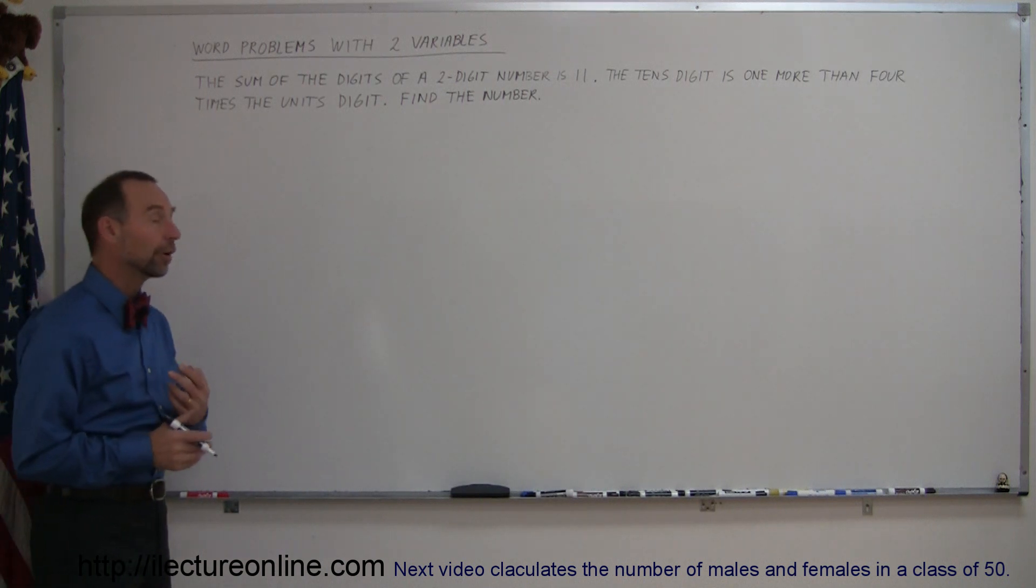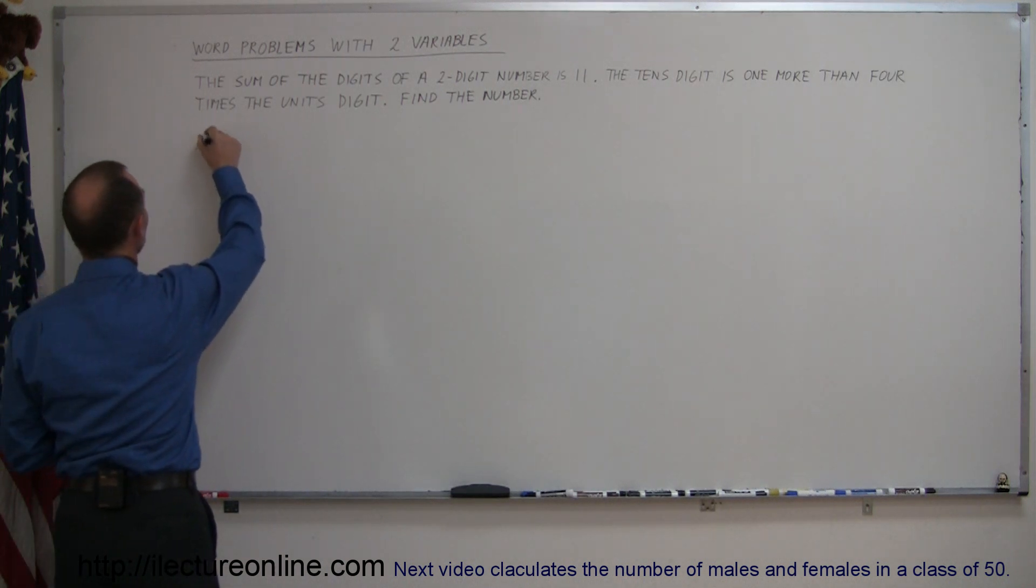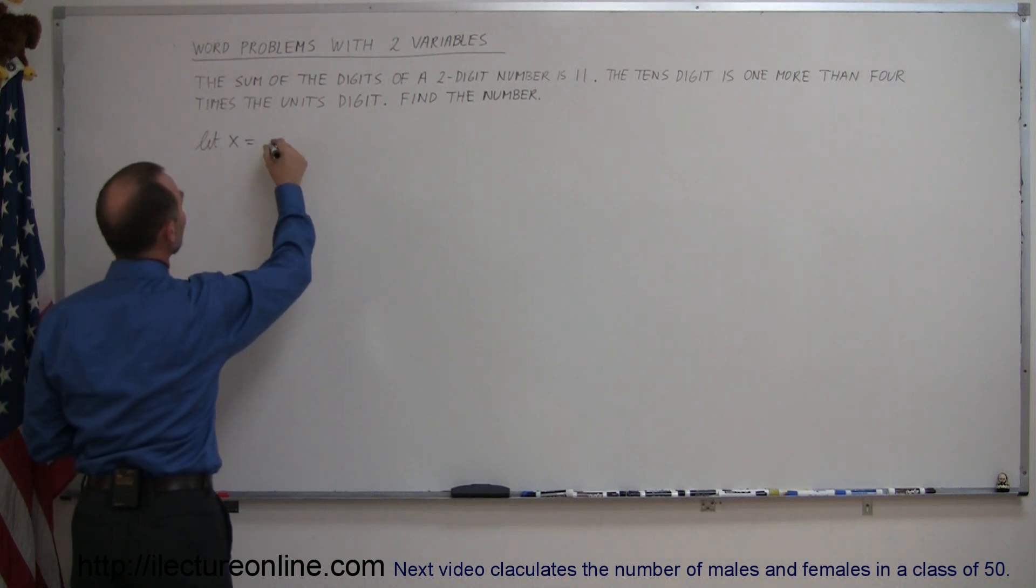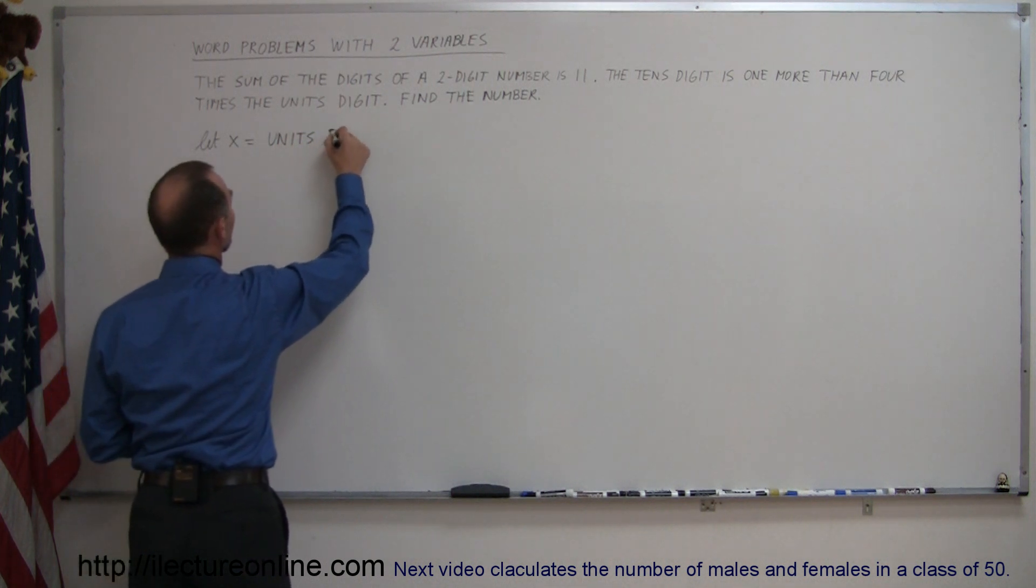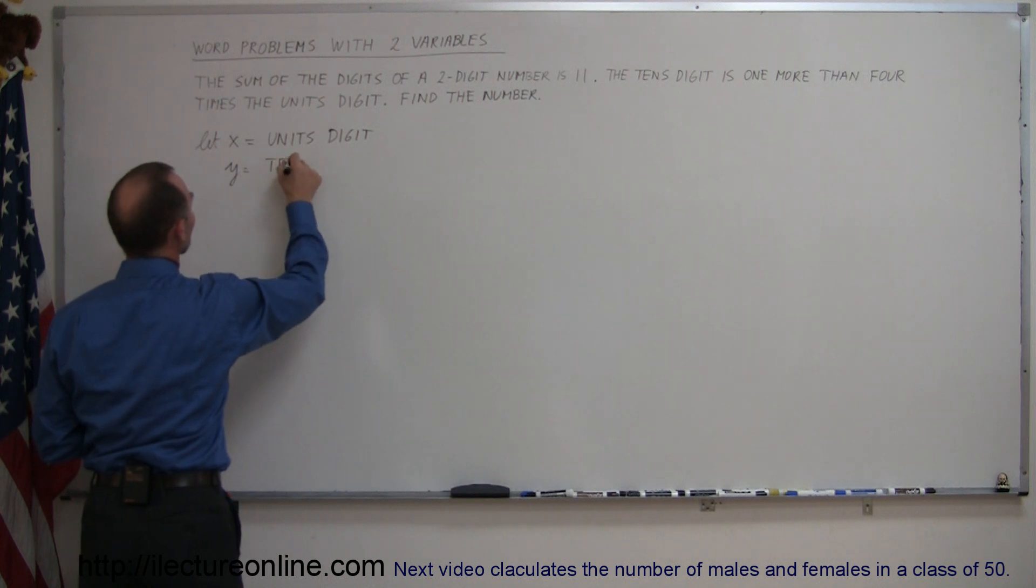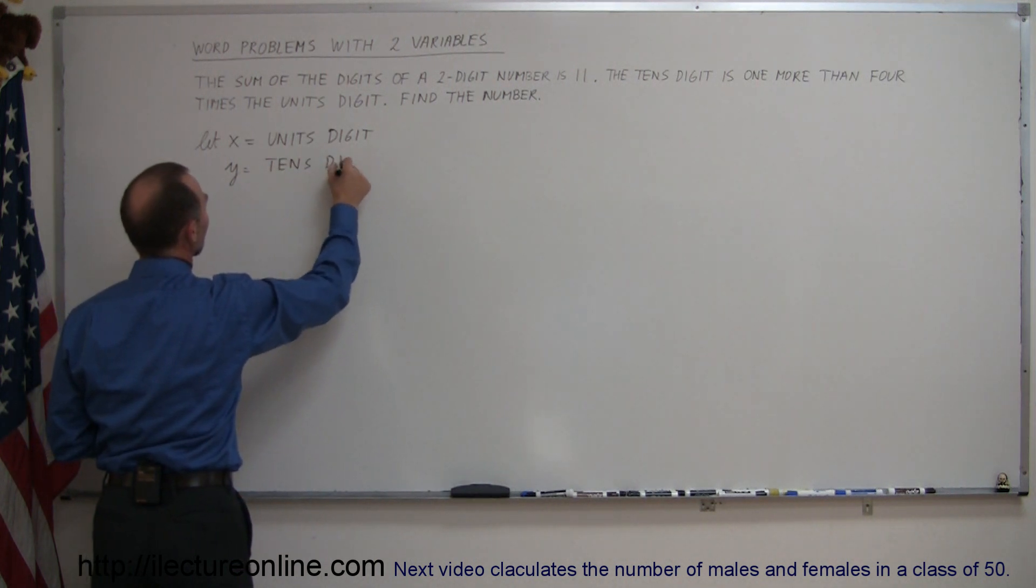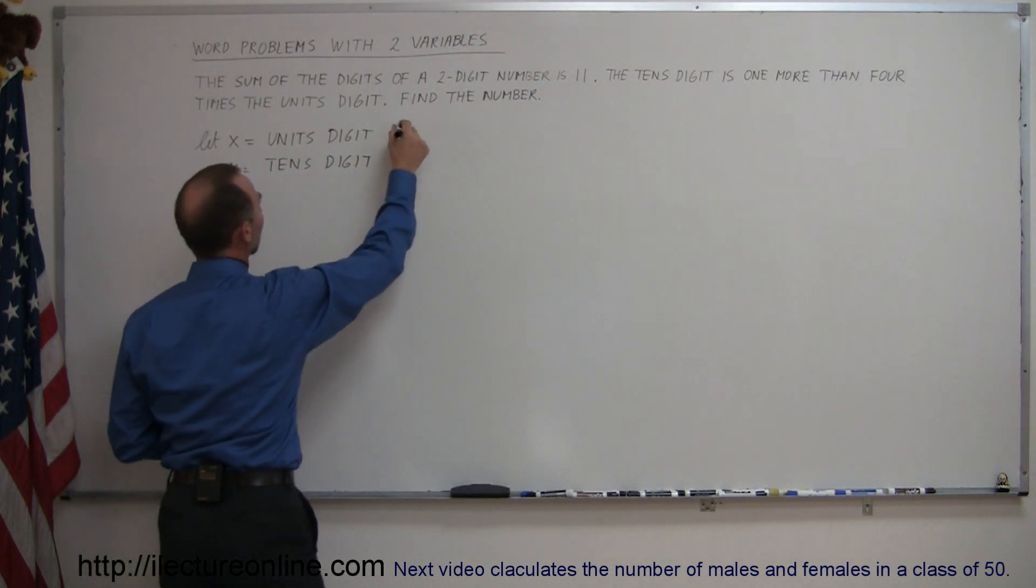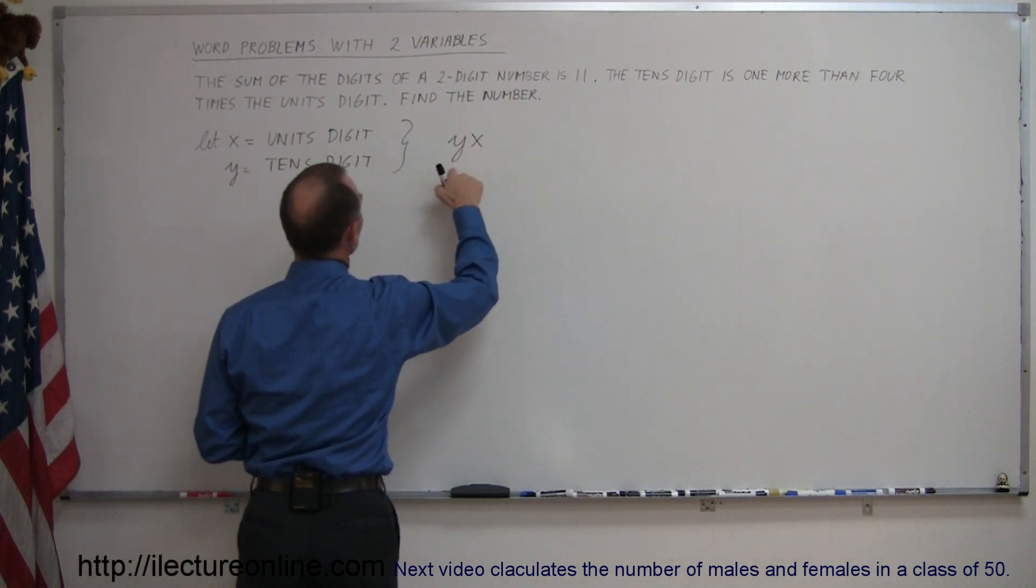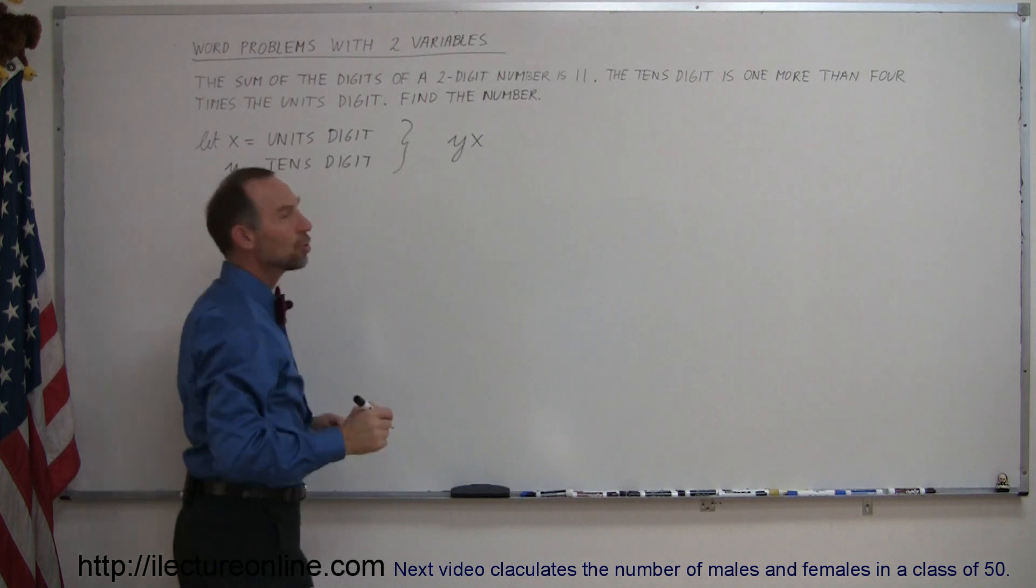So since you're going to be using two variables, you're going to define them. You're going to say let x equal the units digit. And then we're going to use y and call that the tens digit. So that the number that we have will kind of look like yx, y is the tens digit, x is the units digit.